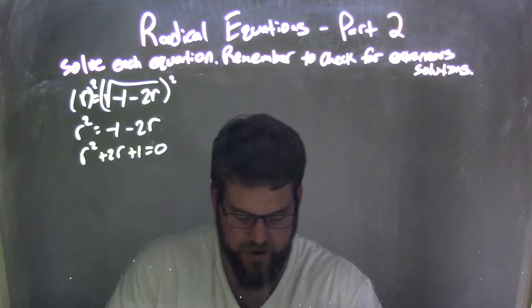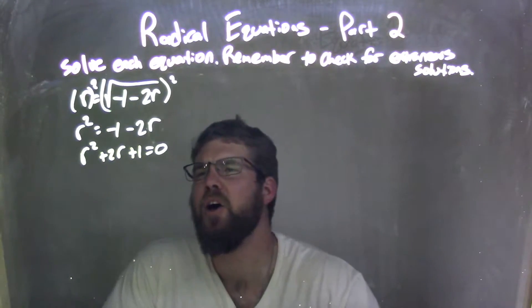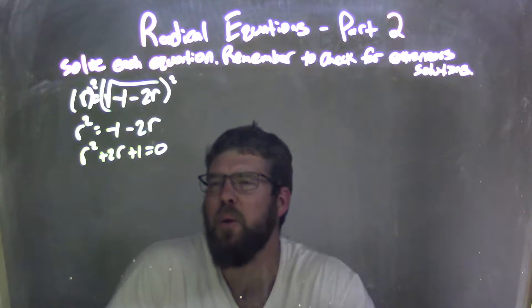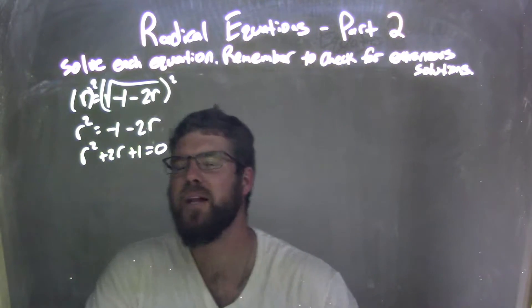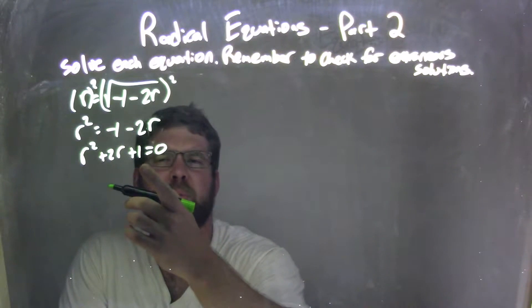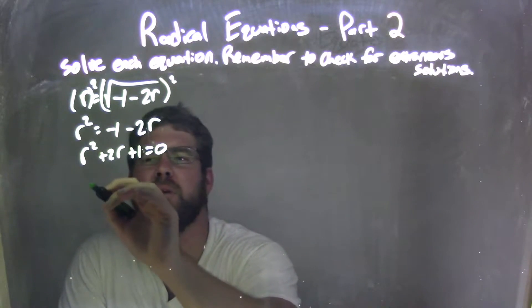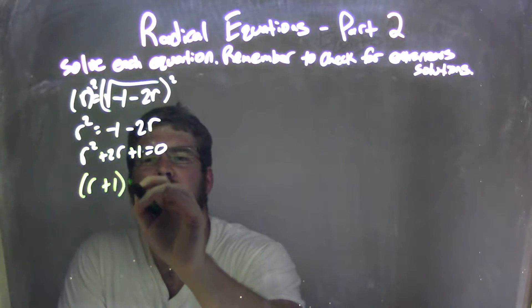So now I'm going to try to factor this. I'm going to factor that. What two numbers multiply to be a 1 but add to be a 2? Well, that's pretty simple.